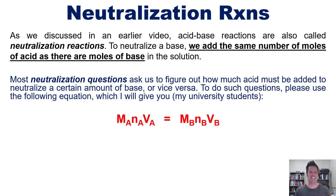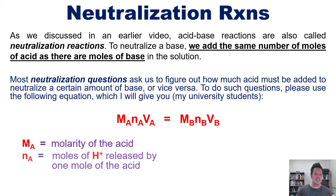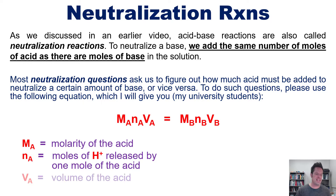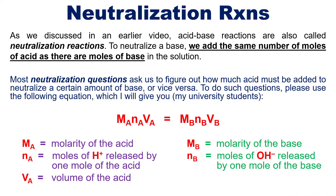In this equation, M sub A is the molarity (moles per liter concentration) of the acid. N sub A is the number of moles of H+ equivalents that that specific acid releases. V_A is the volume of the acid. By analogy, M sub B is the molarity of the base, N sub B is the number of moles of hydroxide equivalents that base gives off, and V sub B is the volume of the base.